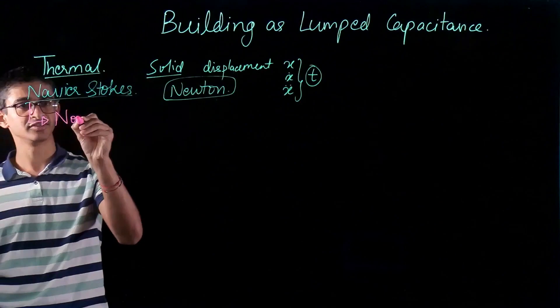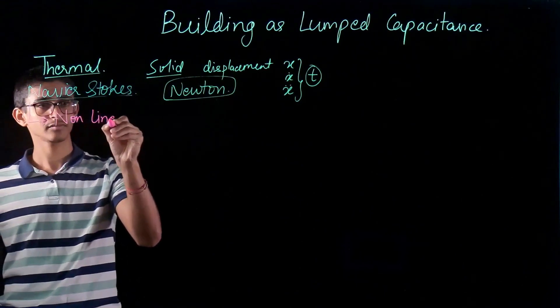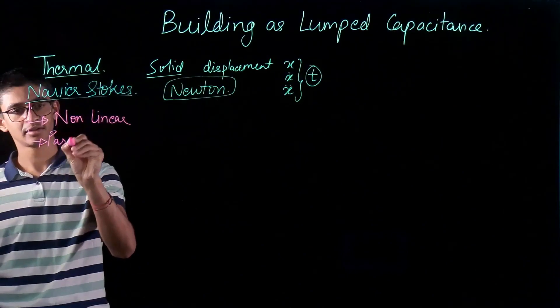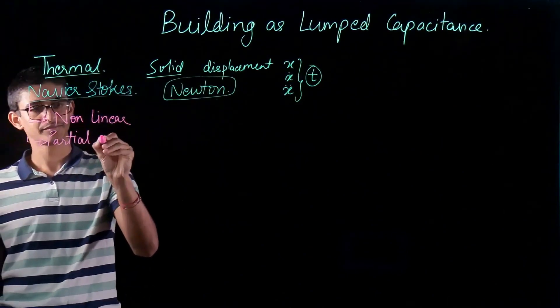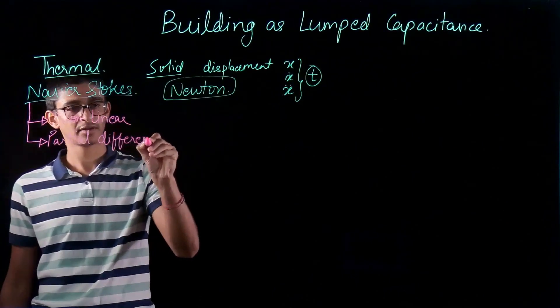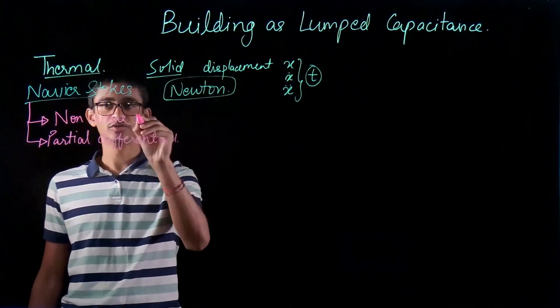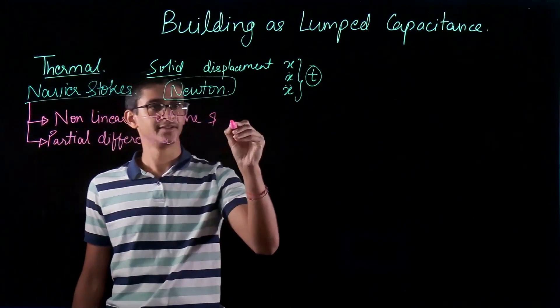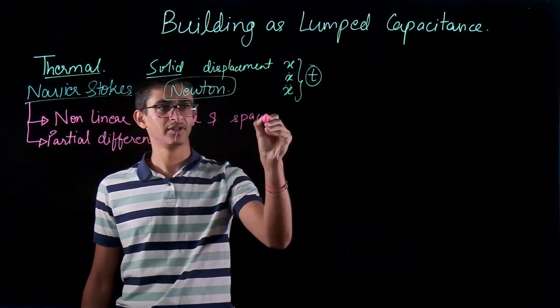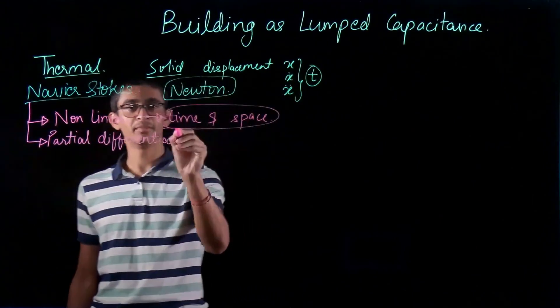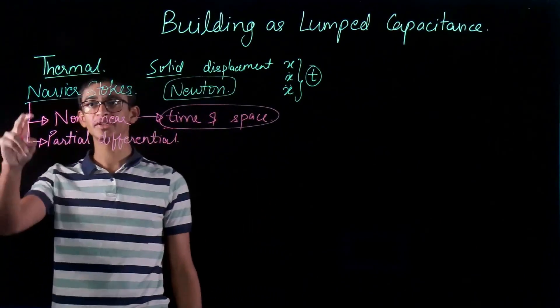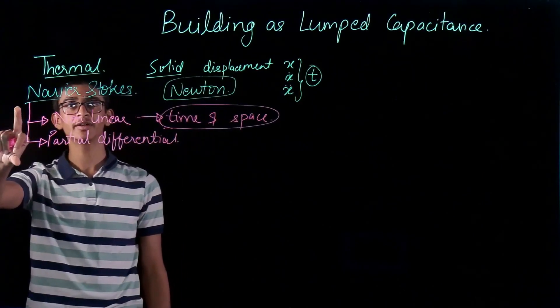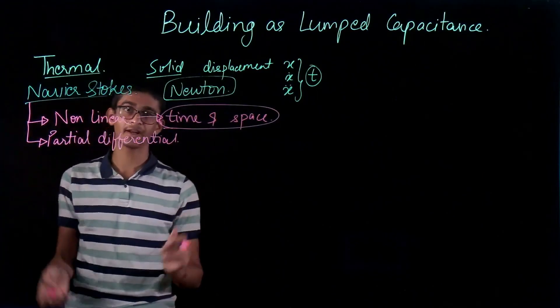The first is it is nonlinear and it is a partial differential equation. And it is nonlinear with time and space, both. So if we combine all these, the complexity of solving a Navier-Stokes equation becomes too difficult and hence we do not have a direct analytical solution.